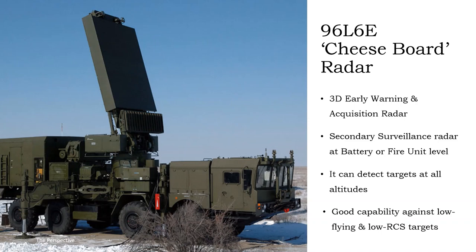The 96L6E Cheese Board radar provides supplementary surveillance capability at battery or fire unit level. It is a 3D radar which has a range of 300 kilometers and can simultaneously track 300 targets.